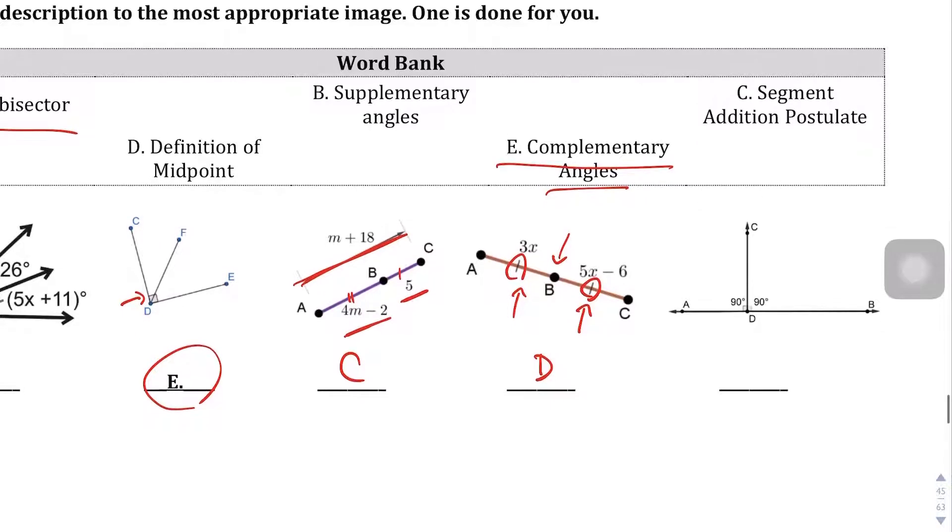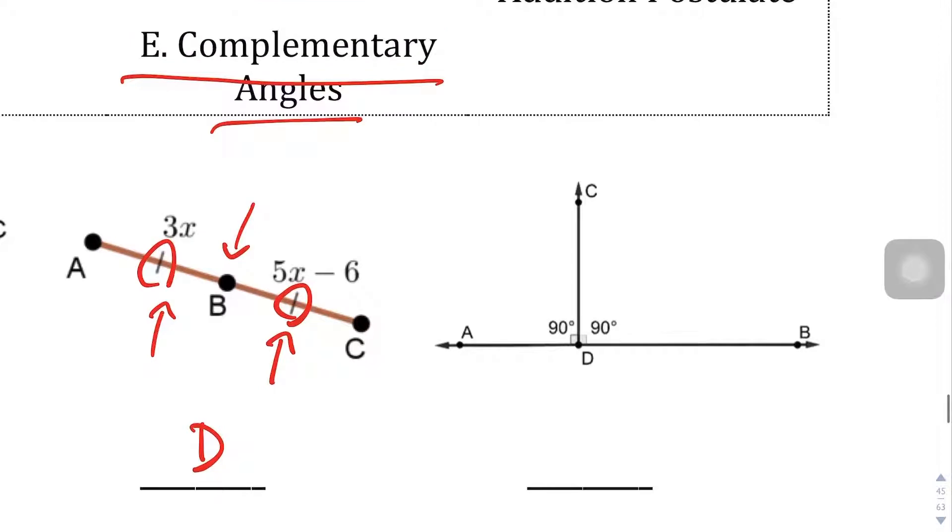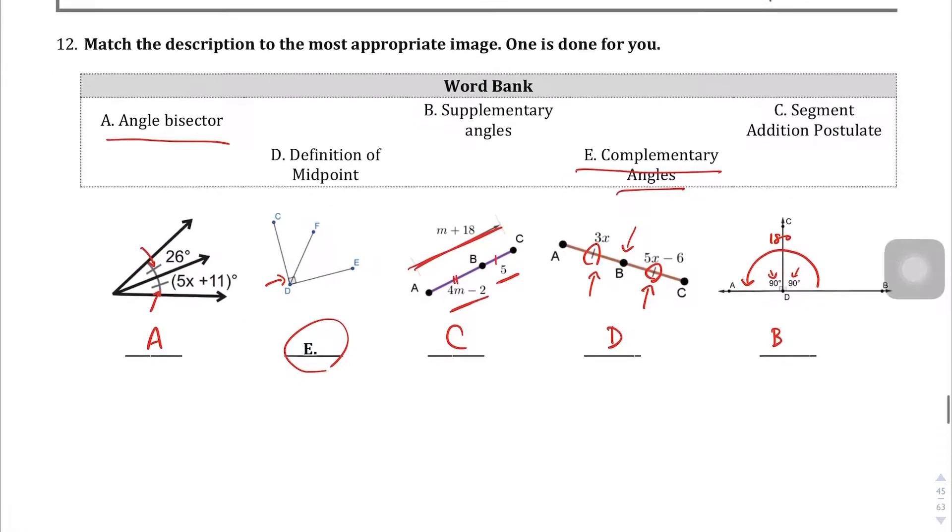And then for this last one, we have a 90 degree angle and a 90 degree angle. You might think that's a complementary angle, but this both adds up to 180 degrees, which is the definition of a supplementary angle.